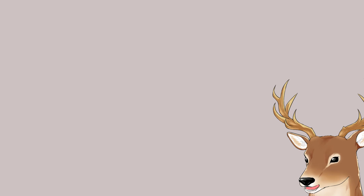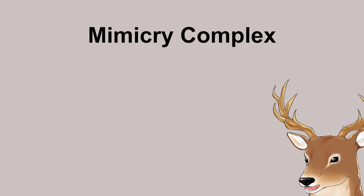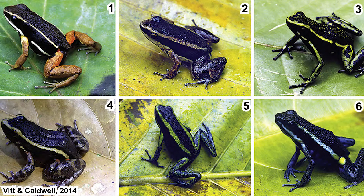Sometimes animals can form a mimicry complex, where both Batesian and Müllerian mimicry happen at the same time. For example, the mimicry complex in Amazonian leaf litter frogs: frogs one and two are non-toxic while the rest are toxic, so frogs one and two mimic the other frogs — that's Batesian mimicry. Frogs three to six mimic each other — that's Müllerian mimicry.